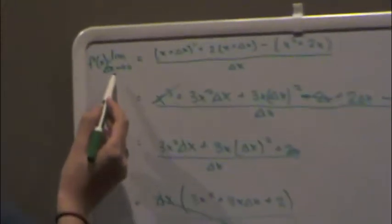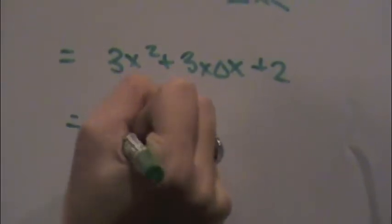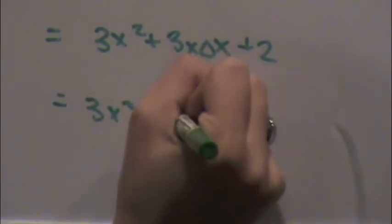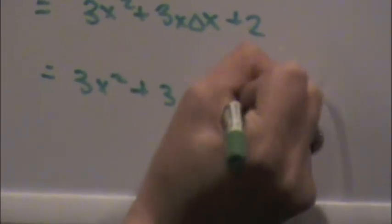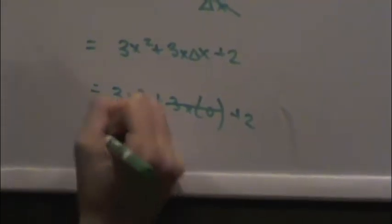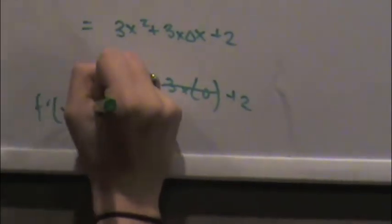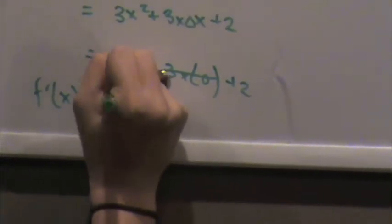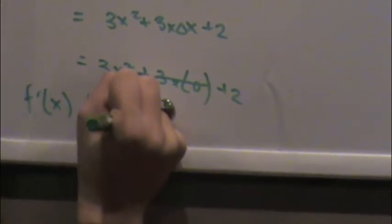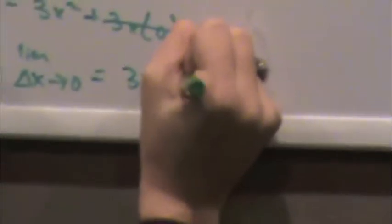And because it's the limit as the change in x is approaching 0, you can solve the limit analytically by plugging in 0. So you get 3x squared plus 3x times 0 plus 2. So this cancels out, and you get the derivative as changing x approaches 0 to be 3x squared plus 2.